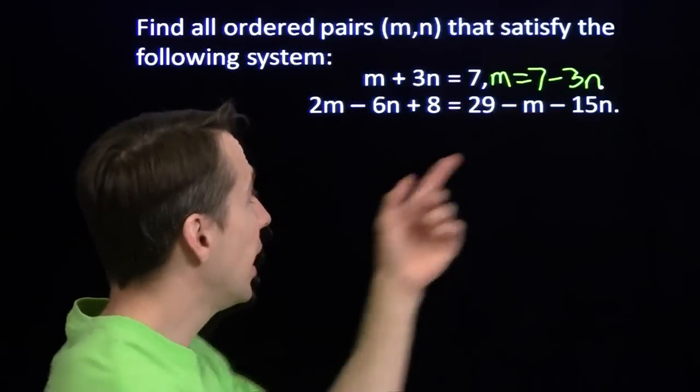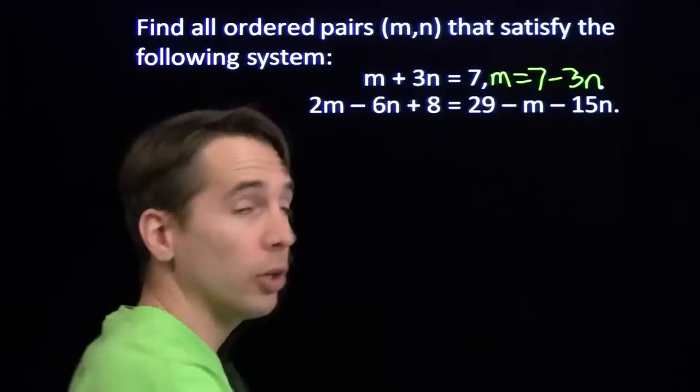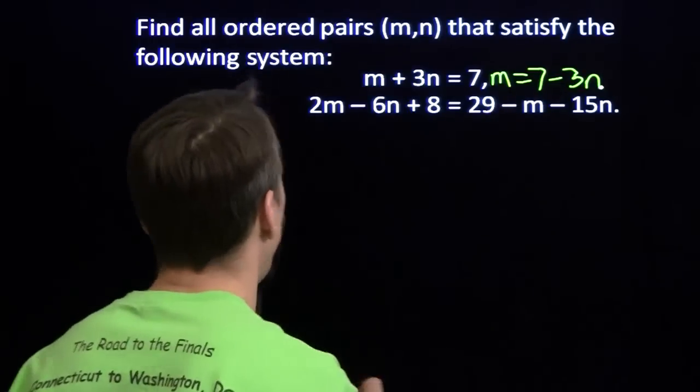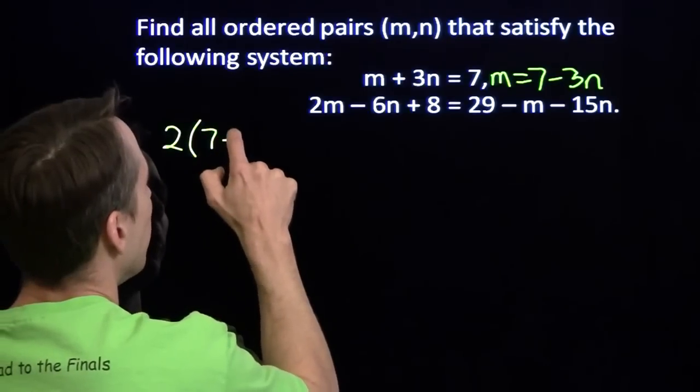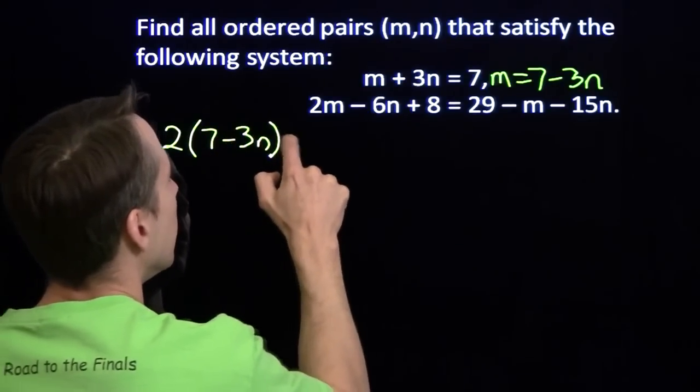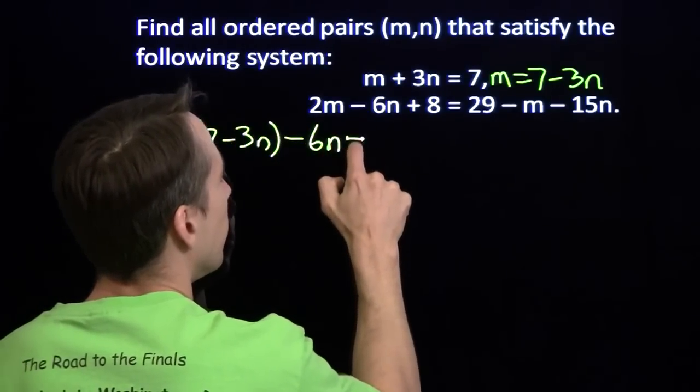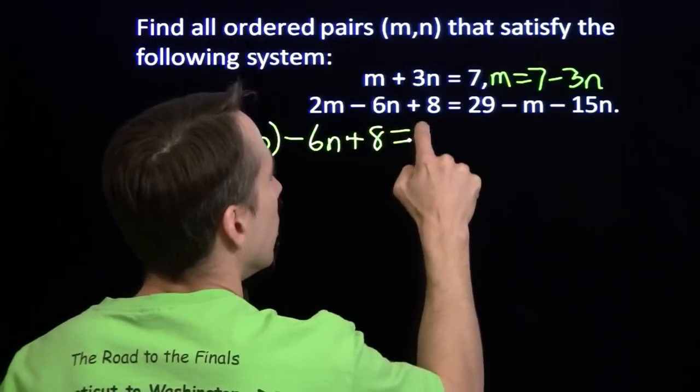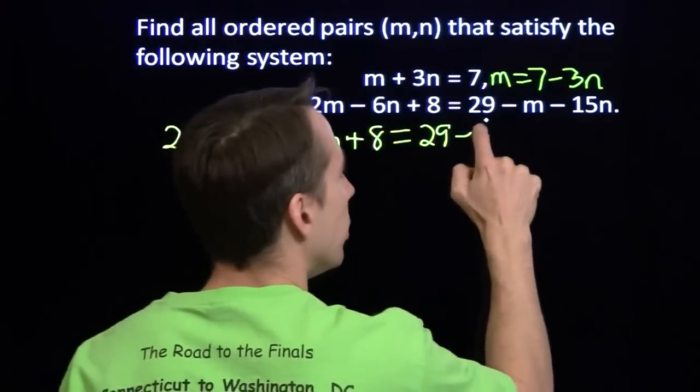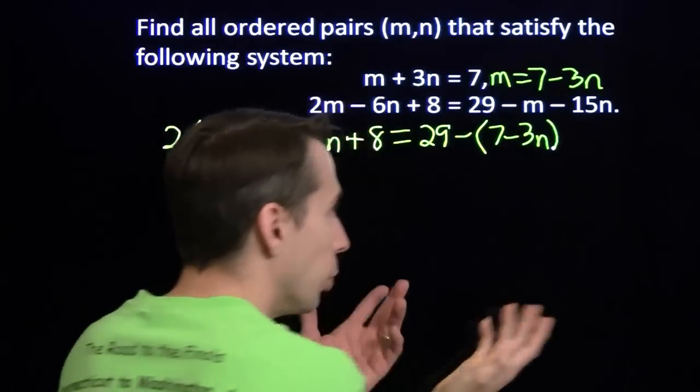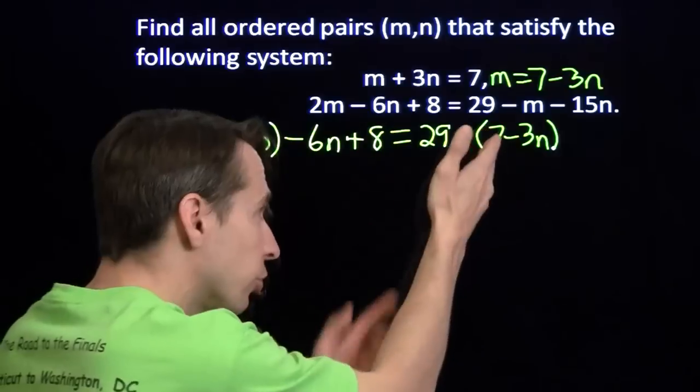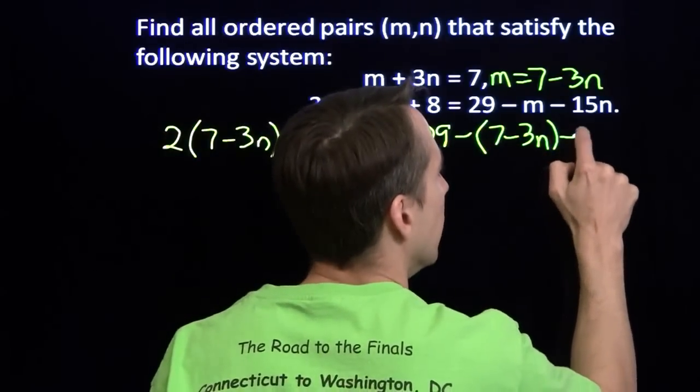Now we're going to take this expression for m and put it in here in the second equation. Everywhere we see m, we're going to put that. So we have 2 times 7 minus 3n minus 6n plus 8 equals 29 minus, that is very important, put in the parentheses. So remember, we're subtracting the 7 and we're subtracting the minus 3n.